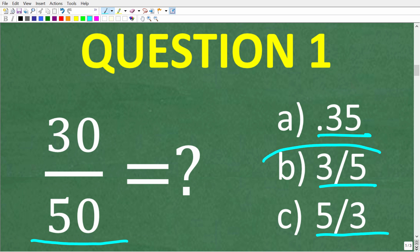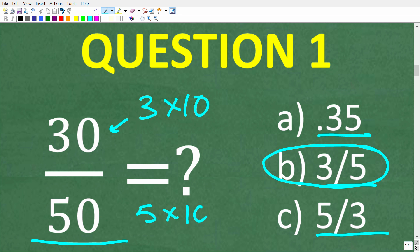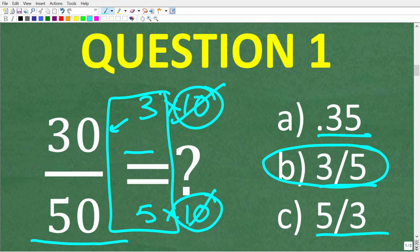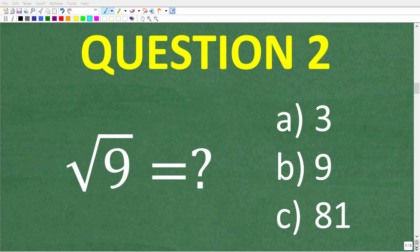The correct answer is B, the fraction 3 fifths, because we can factor out a 10 in both the numerator and denominator. In other words, 30 is the same thing as 3 times 10, and 50 is the same thing as 5 times 10. So when you have like factors in the numerator and denominator, you can cross cancel, and what is left is the simplified fraction.